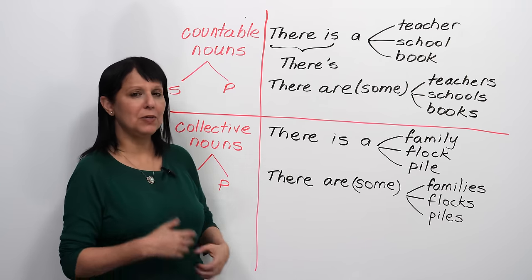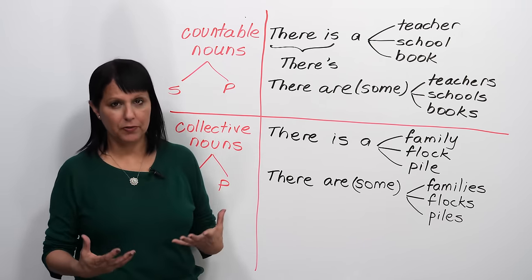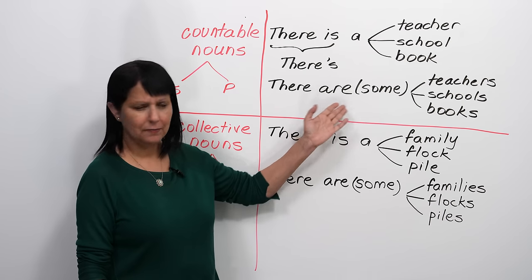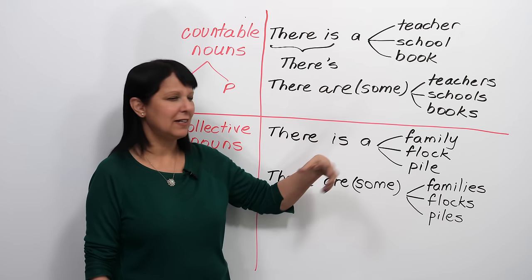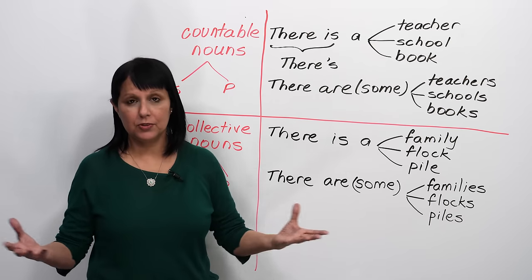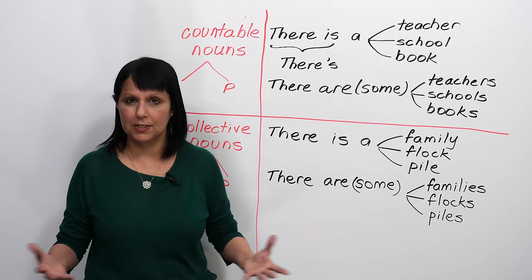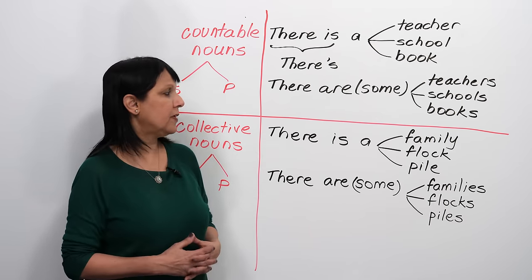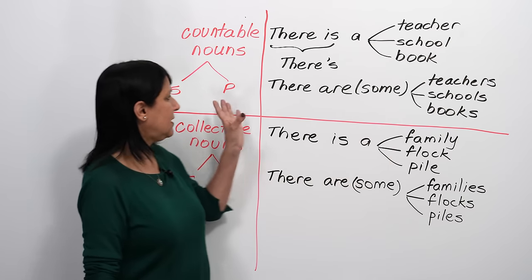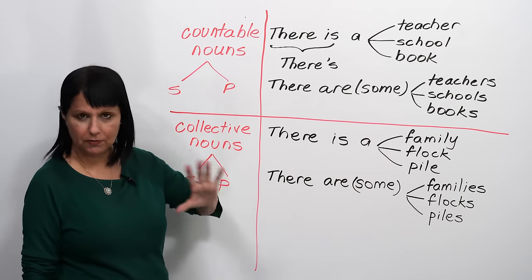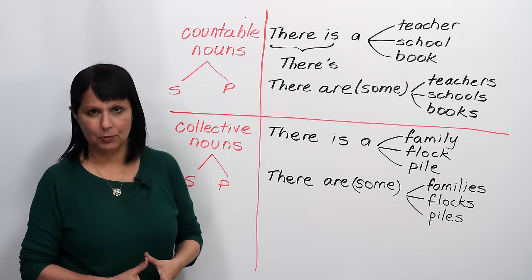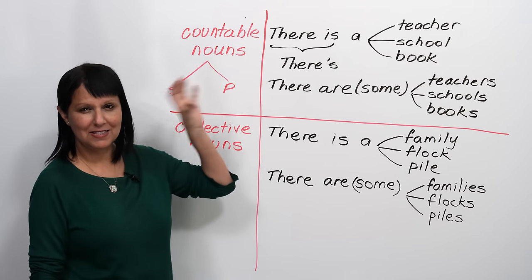Now what happens when we have many — when we have plural, more than one noun — then we say 'there are.' You might say 'there are some teachers in the classroom,' 'there are some schools in this neighborhood,' 'there are many schools in this neighborhood,' or 'there are some books on the tables.' These countable nouns are very straightforward. Usually we just make them plural by adding an S. So that's one basic situation.